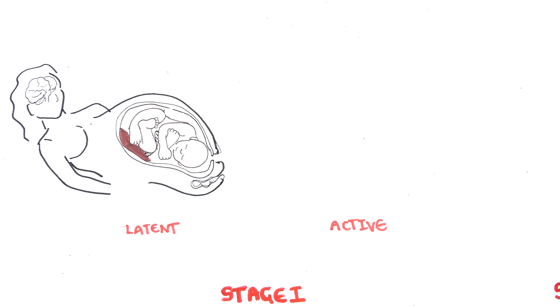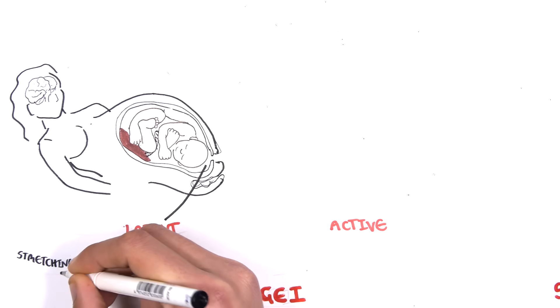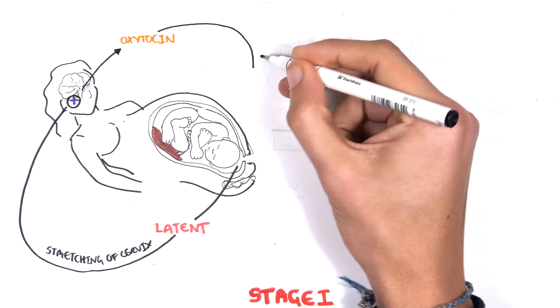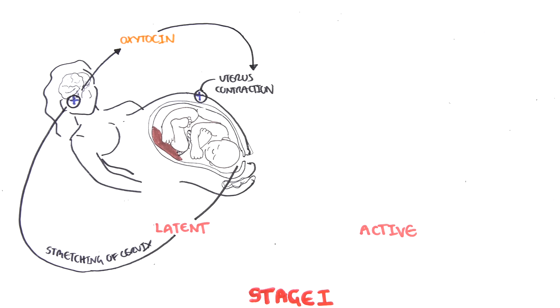When labor begins, the cervix is stretched by the baby due to release of certain factors. The stretching of the cervix sends signals to the hypothalamus and posterior pituitary gland to release oxytocin. Oxytocin travels to the uterus via the blood and stimulates uterine contractions. When the fetus is ready to go out, it releases factors that stimulate the placenta to secrete prostaglandins, which also stimulate uterine contraction. With all this uterine contraction by oxytocin and prostaglandin, the cervix stretches out even more, and the cycle continues. It's a positive feedback loop.